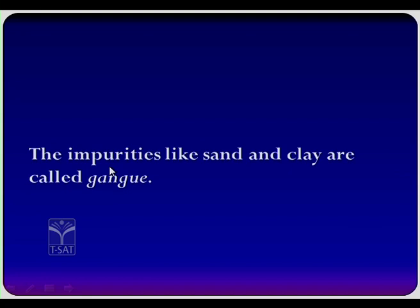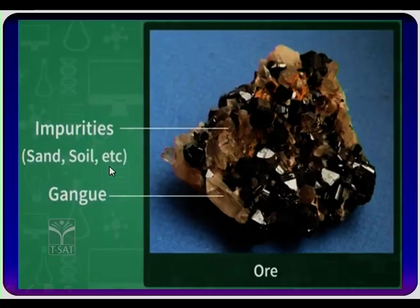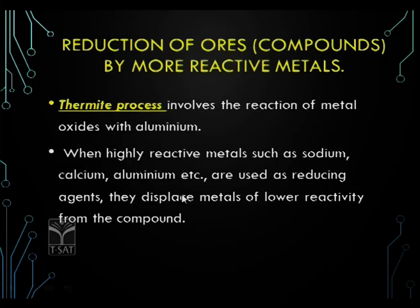The impurities we separate from the pure ore are called gang. Sand and clay removed from the ore constitute the gang. Looking at this picture, sand and soil can be clearly seen — that sand and soil is nothing but the impurity present along with the ore, called gang.